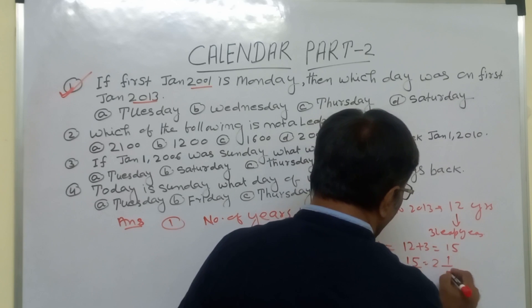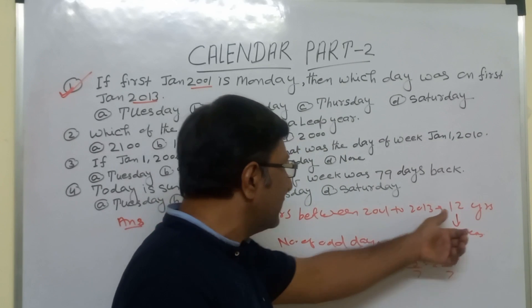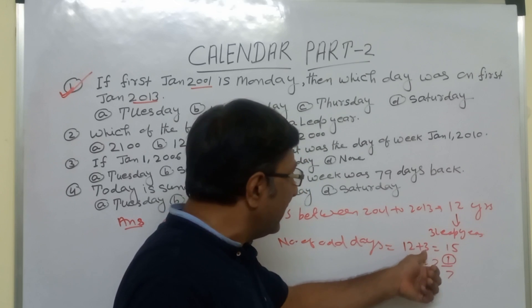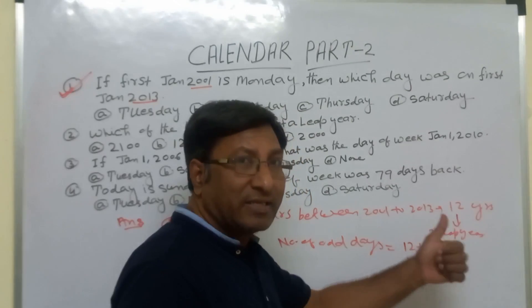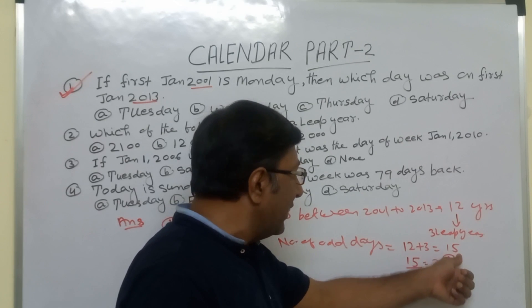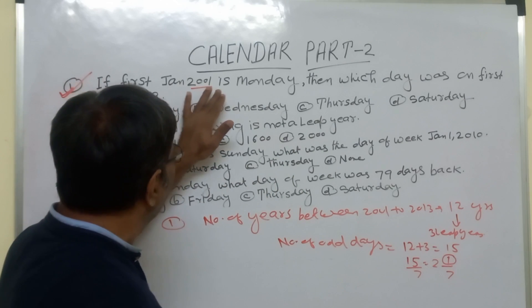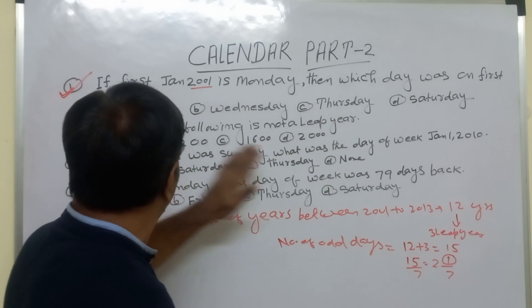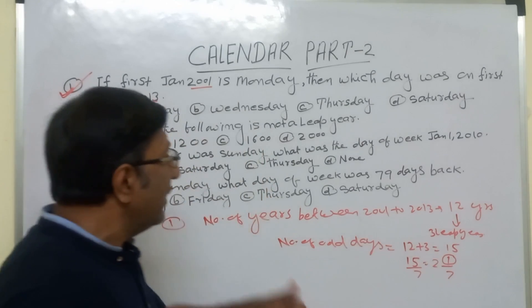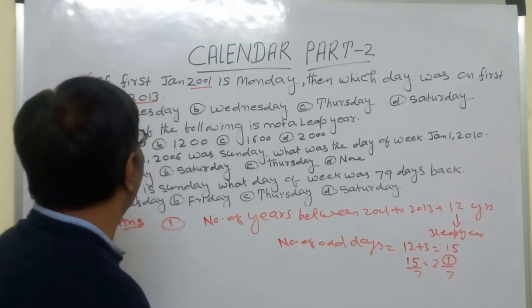When you divide 15 by 7: 7 times 2 is 14, remainder is 1. So the number of odd days is 1. Our question was: if January 1, 2001 is Monday, then which day was January 1, 2013? The number of odd days is 1, so we move one day forward. One day after Monday is Tuesday, so Tuesday is our answer.